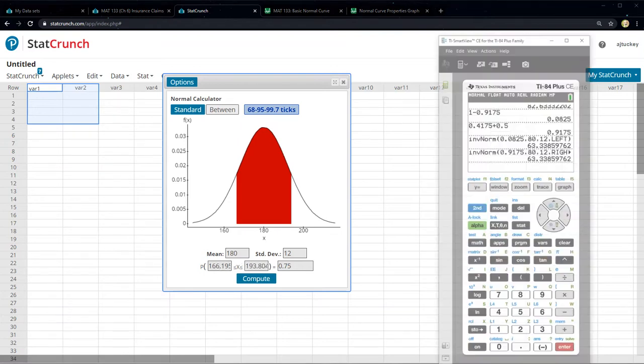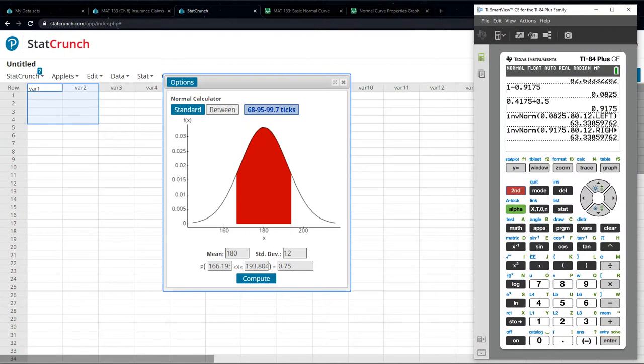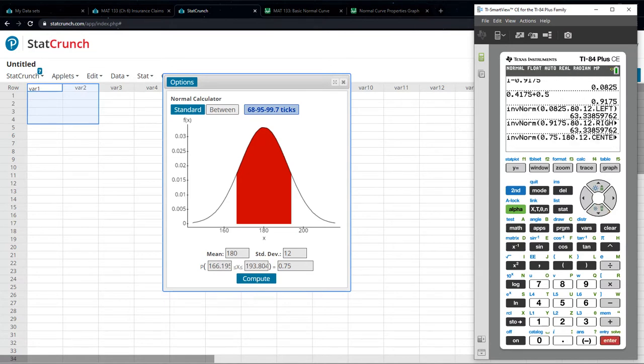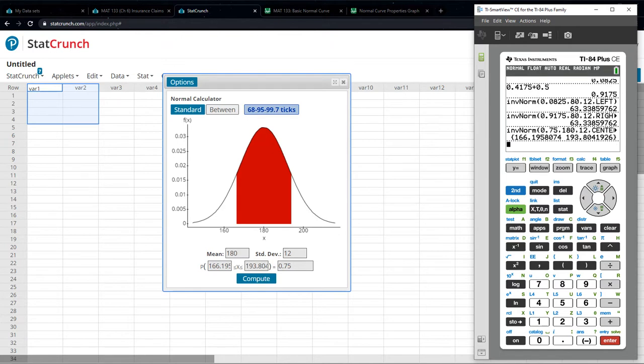If you have a newer calculator, it's easy for you also. So a newer calculator, you can say inverse norm, you can say 0.75, 180, and 12, and choose center, which is essentially what we're doing in StatCrunch. And it finds both those values. All right. So new calculator is easy. Let me write it down.